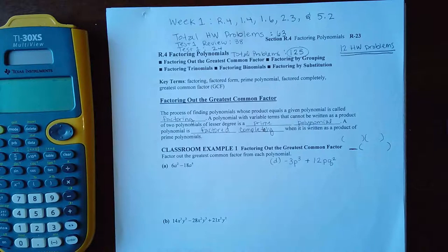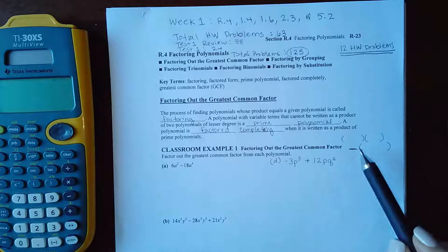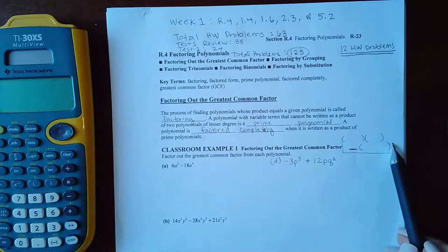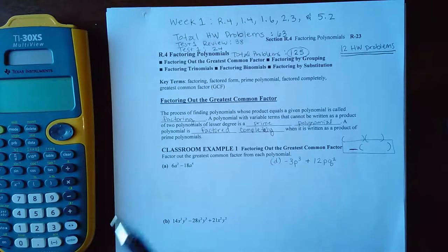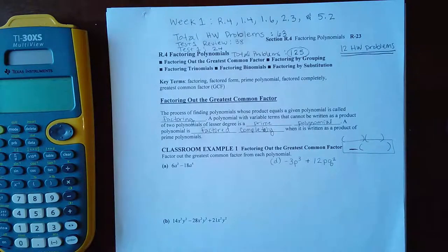Now the first example, it says classroom example one, factoring out the greatest common factor. What that's going to look like is this version. You're going to factor out a common monomial, one term, and then what's left over is a polynomial inside the parentheses.